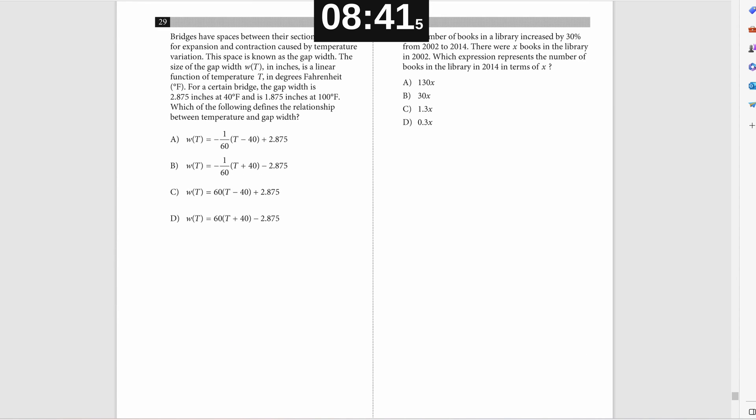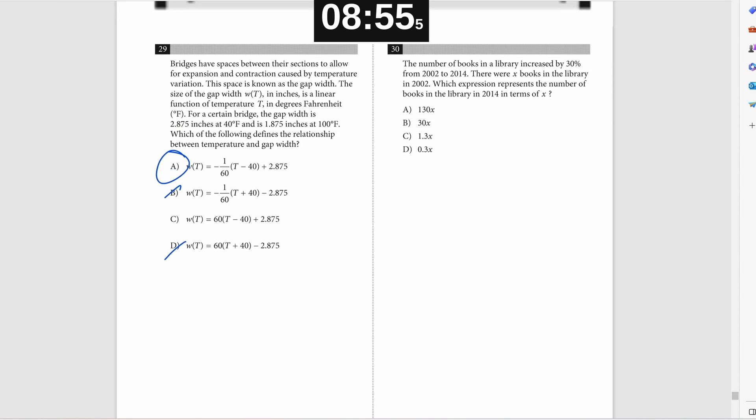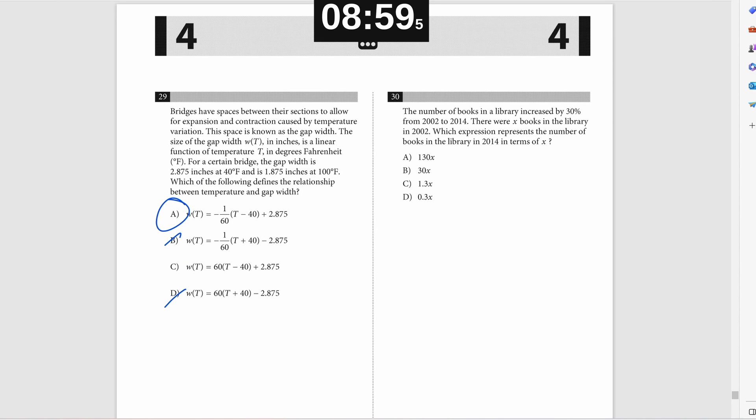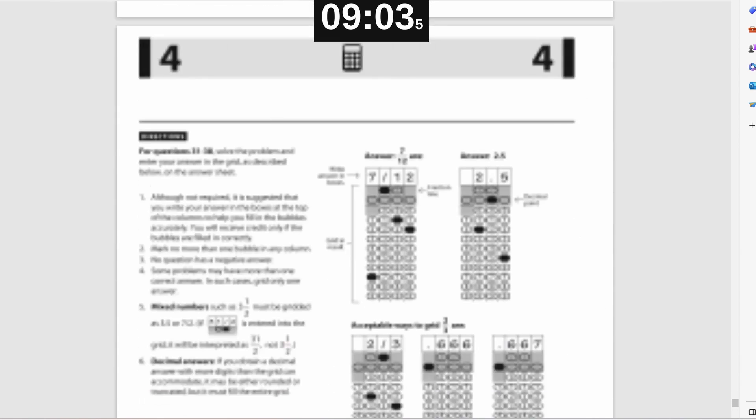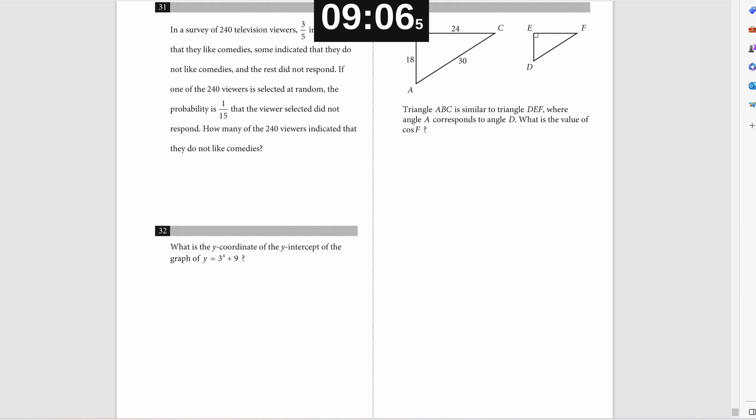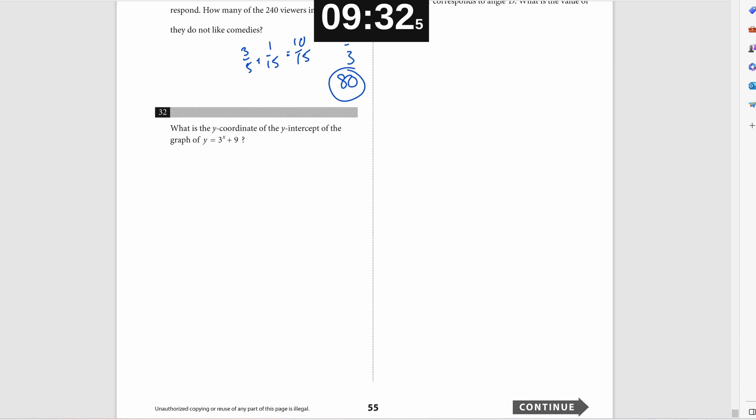Problem number 29. It basically tells you that your WT is 2.875 when T is 40, your WT is 1.875 when T is 100. So then I'm just kind of plugging in 40, seeing where that would cancel out and then plugging in 100 and seeing what that would get me. And A would be the solution. Problem number 30 is very simple. They increased their books by 30%. That means 1.3 times the previous number of books. Problem number 31, they tell you of 240 television viewers, three fifths indicated they like comedies. And then one 15th said they didn't respond. And you're looking for the third category of people that don't like comedies. So what I'm doing here is I'm combining the ones that like comedies and the ones that didn't respond that gets you 10 15ths, which means five 15ths are the ones who don't like comedies. Which is one third, which is one third of 240 is 80.